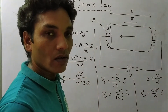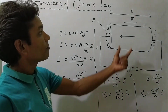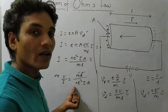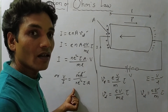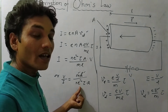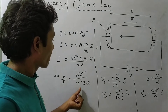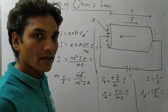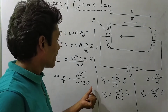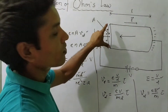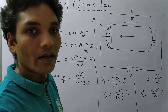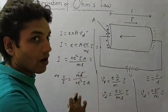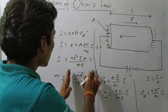Now, m is the mass of an electron — that is constant. L is the length of the conductor — that is also constant. n is the number of free electrons per unit volume — that is also constant. e is the charge of an electron — that is constant. τ is the relaxation time, and for a particular temperature τ is fixed, so that is also constant. A is the cross-sectional area — that is also constant for the same conductor. So all these values are constant.